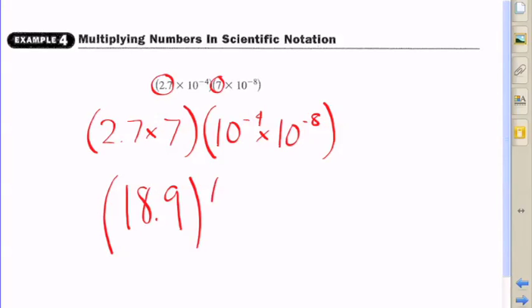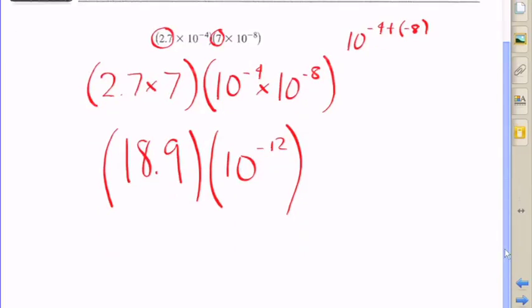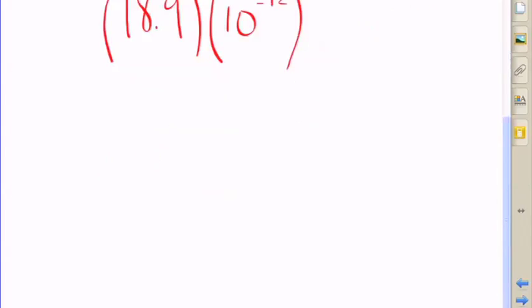2.7 times 7 is 18.9, and since we have the same base on this side, all we have to do is add the exponents together. So we're going to add negative 4 and negative 8 and of course come up with negative 12. So essentially we have 18.9 times 10 to the negative 12.